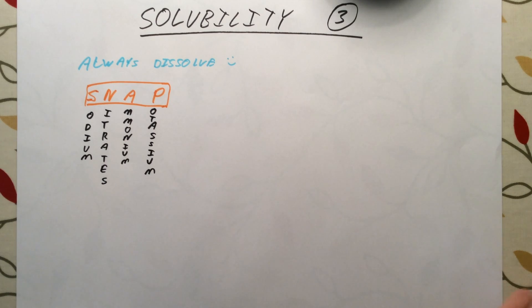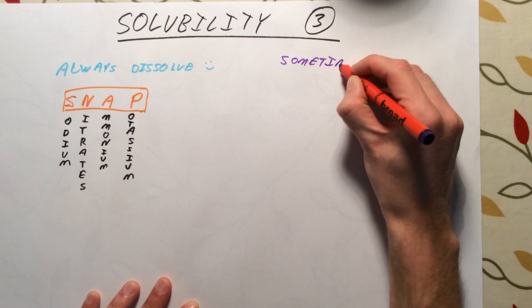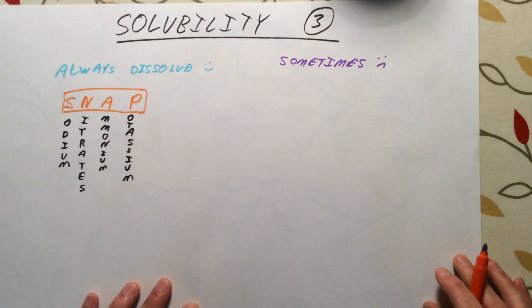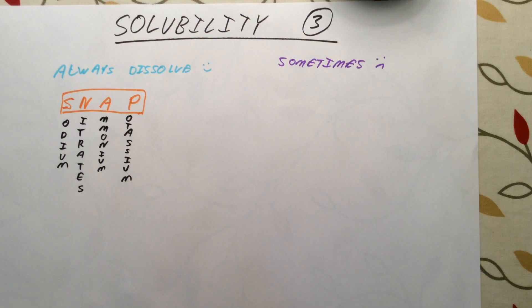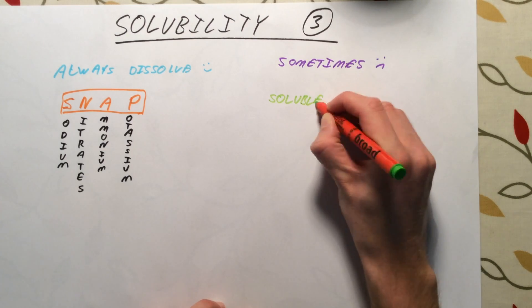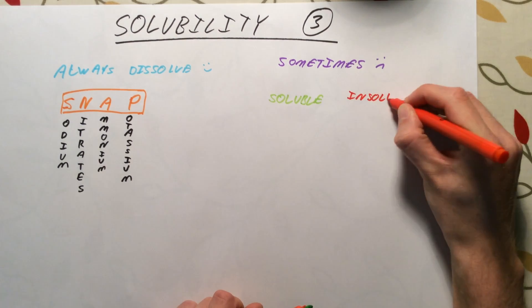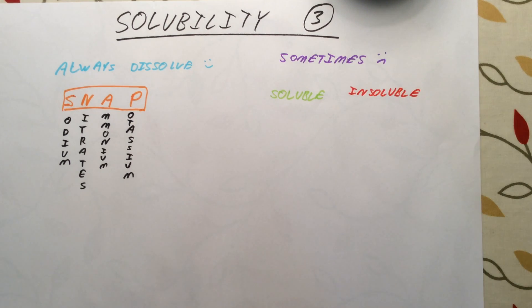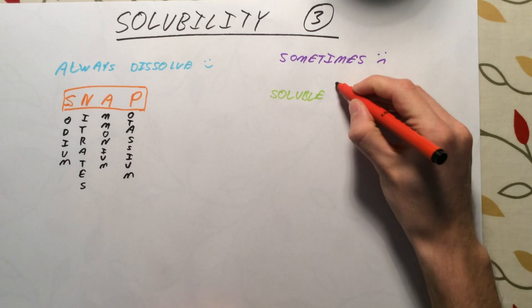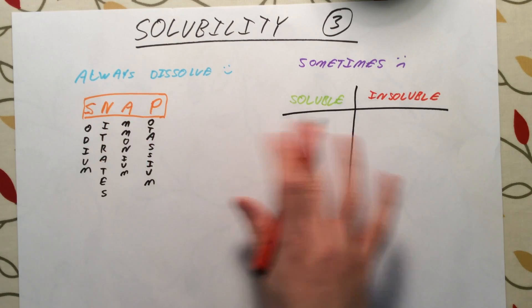The harder ones are the ones that sometimes dissolve. There are general rules here, but there are exceptions to them. These ones are a lot harder to remember. I'm going to divide these up into two sections: those which are generally soluble or dissolve in water, and those which are generally insoluble or those that generally don't dissolve in water. I'm going to represent these as a table. You really do need to learn these. If you remember SNAP ones always apply, it does make these ones a bit easier as well.